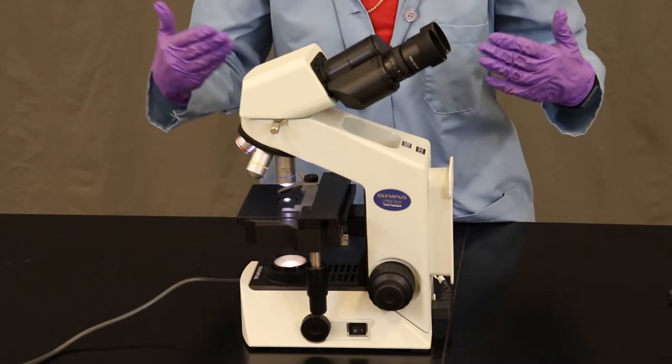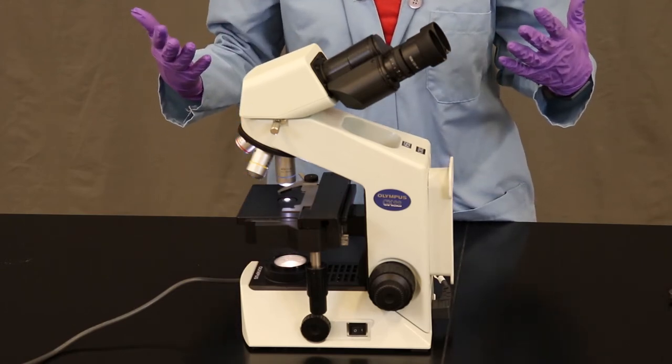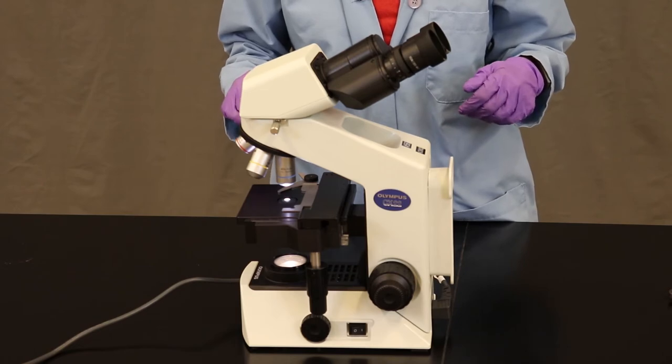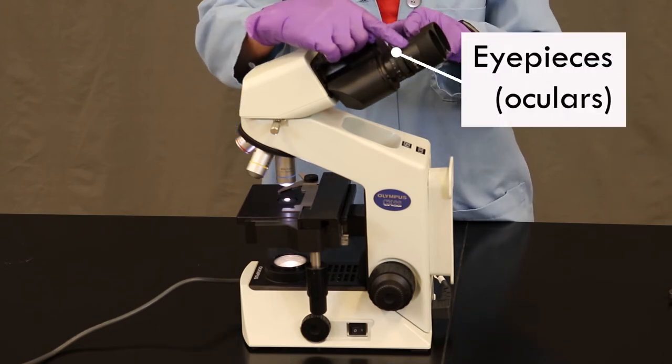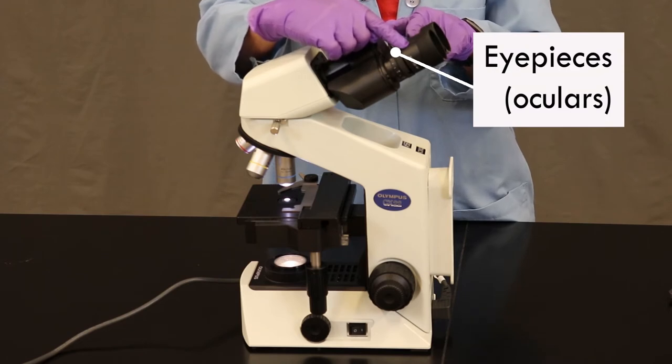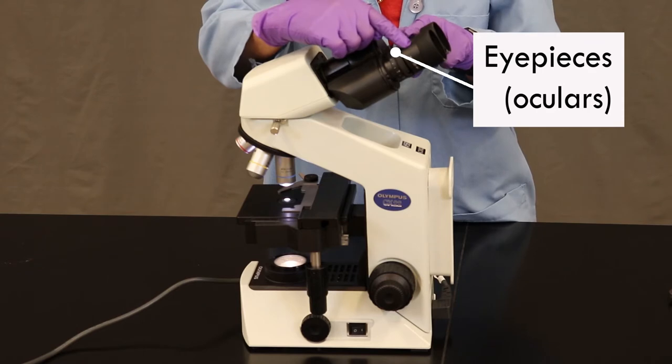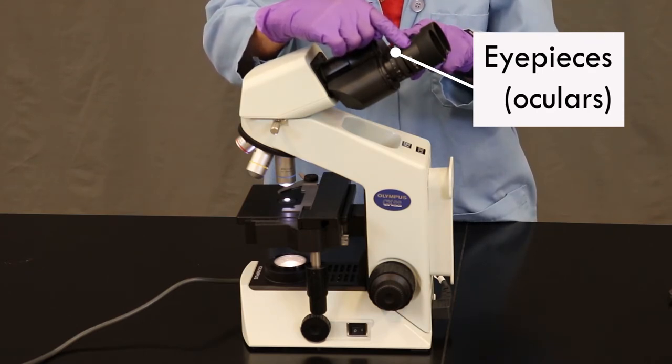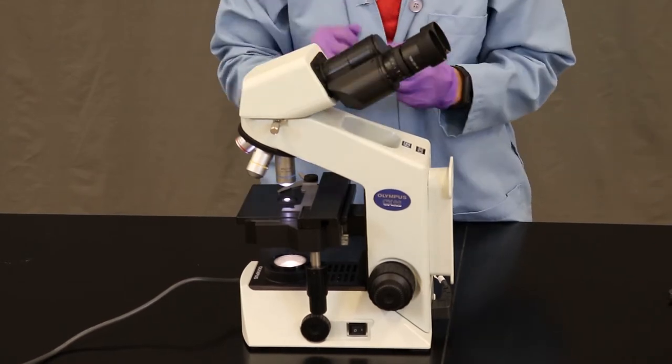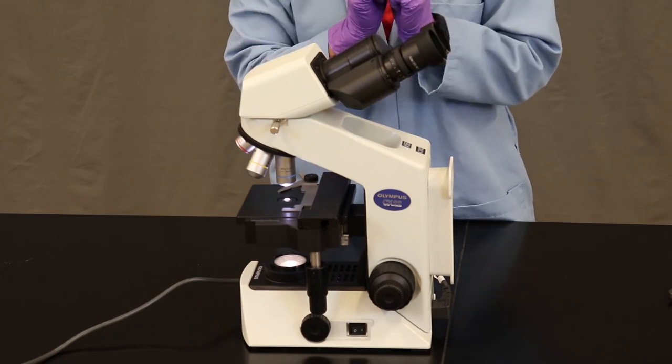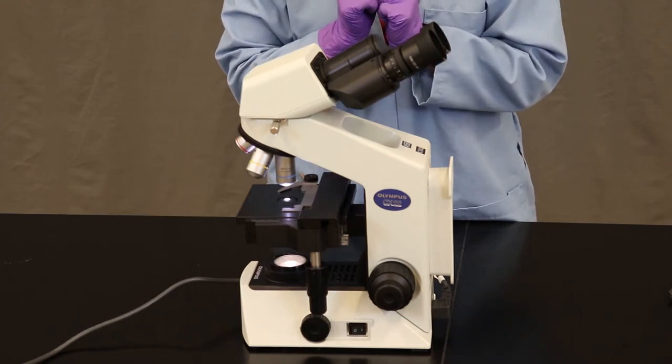The parts of this microscope all have names. So one of your questions asks you to label some of the parts. Why don't we go over some of them? There are the eyepieces and this is where you put your eyes. They are basically like when you look through a pair of binoculars. So if we could take all of this off, it would be like a pair of binoculars and each eyepiece magnifies what we're looking at 10 times.